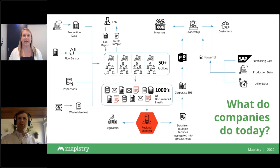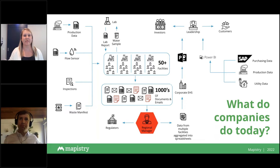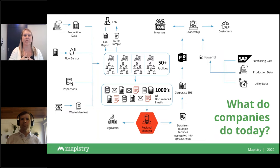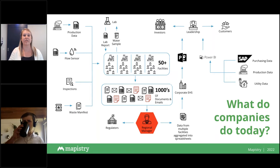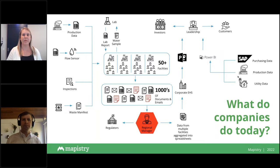What are companies doing today? On the right side of the organization — purchasing data, utility data, HR, accounting — it's all being handled in a comprehensive digital solution and leadership has access to that information when they need it. On the other side, with most EHS programs, you've got lots of information being collected across lots of facilities, different reports to send to regulators, different requests from leadership — and the challenge is it's all still flowing through a person. Somebody is gathering all these disconnected sources and pulling them together, spending maybe a month at year-end just to handle their air permitting.